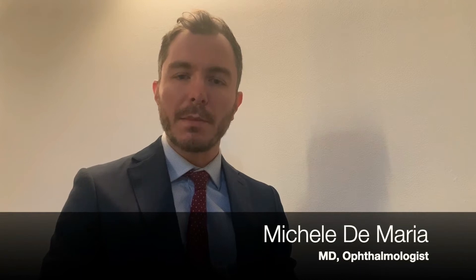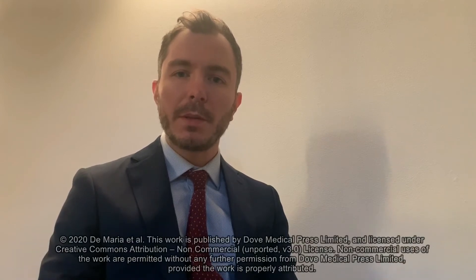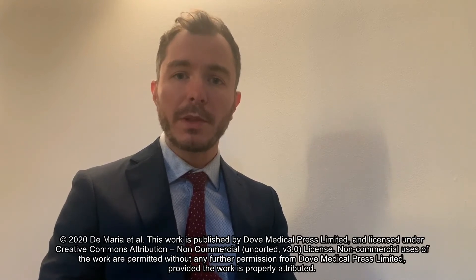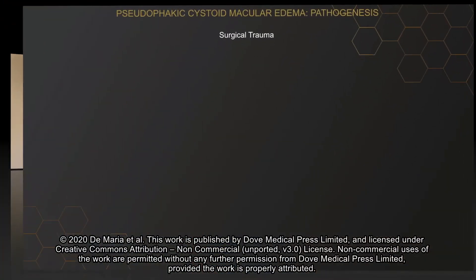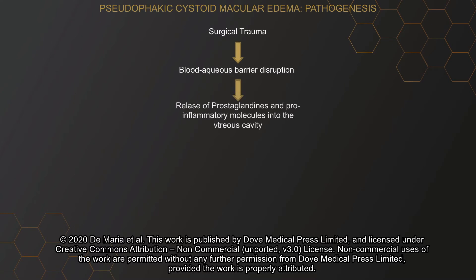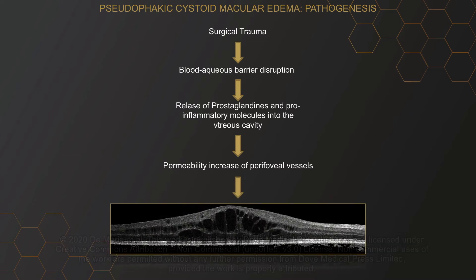Even though the continuous improvements in techniques and equipment in modern cataract surgery, cystoid macular edema is an infrequent but potentially visually impairing complication that may occur after uneventful phacoemulsification with IOL implantation. Surgical trauma causes blood-aqueous barrier disruption with leakage of pro-inflammatory molecules and cells into the anterior chamber of the eye. Prostaglandins and other pro-inflammatory mediators diffuse into the vitreous cavity and increase the permeability of perifoveal vessels, with accumulation of fluids and cystic changes to the macula.